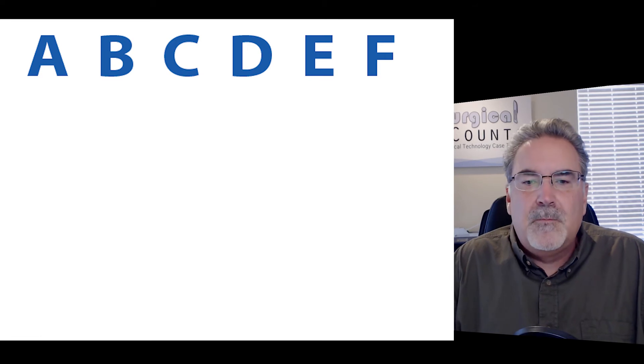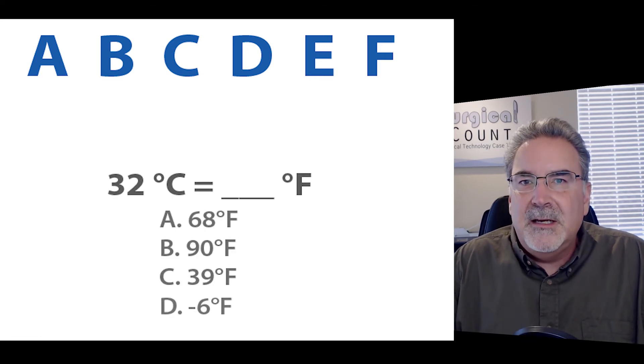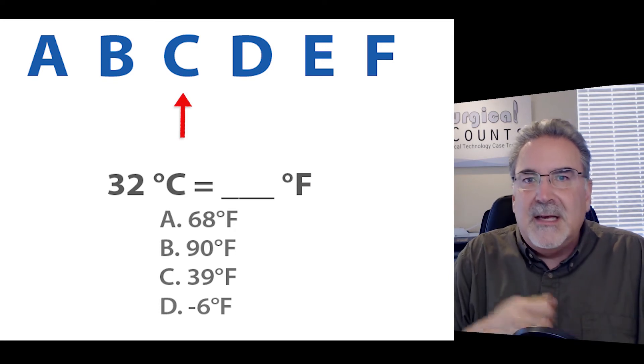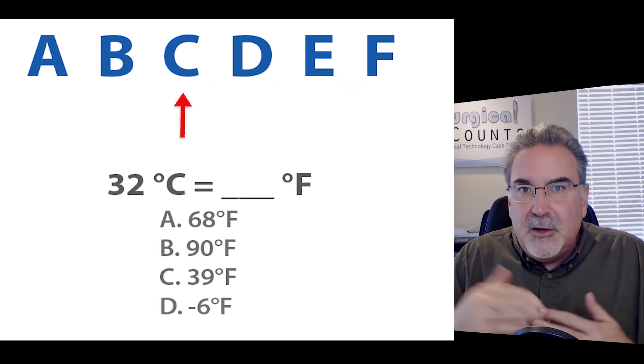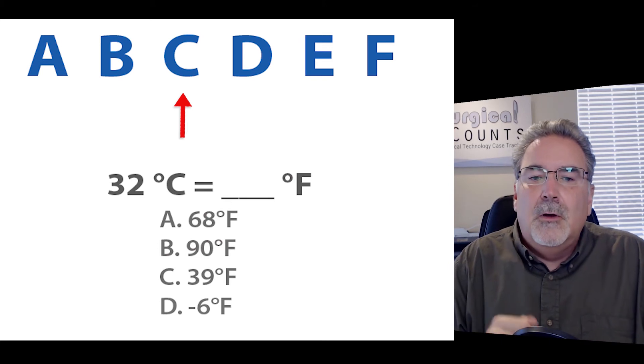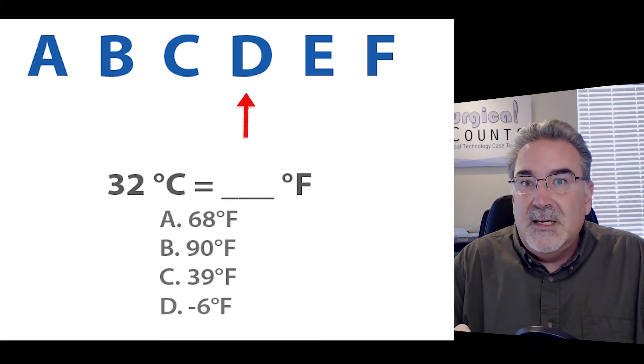So let's try another one. 32 degrees C in how many degrees Fahrenheit? Well, we're going from C to F. So we're going up the scale. We're going to increase all of our numbers. So 32 D double means 64.